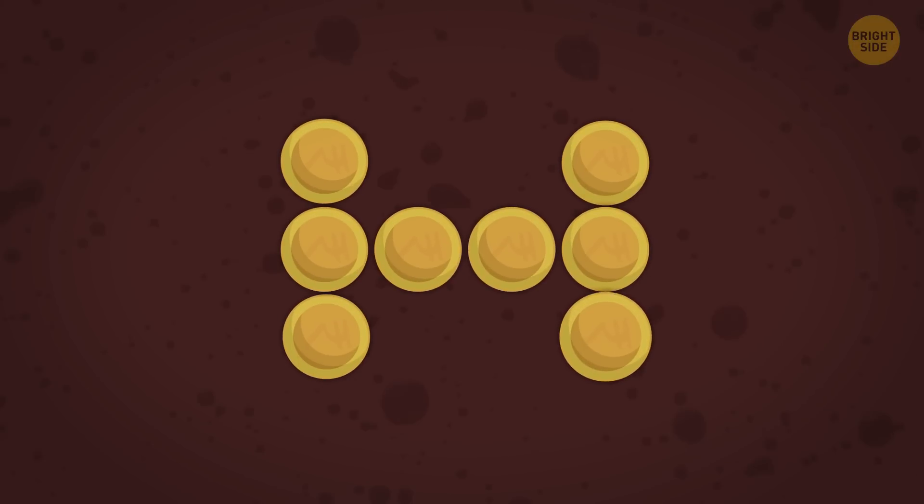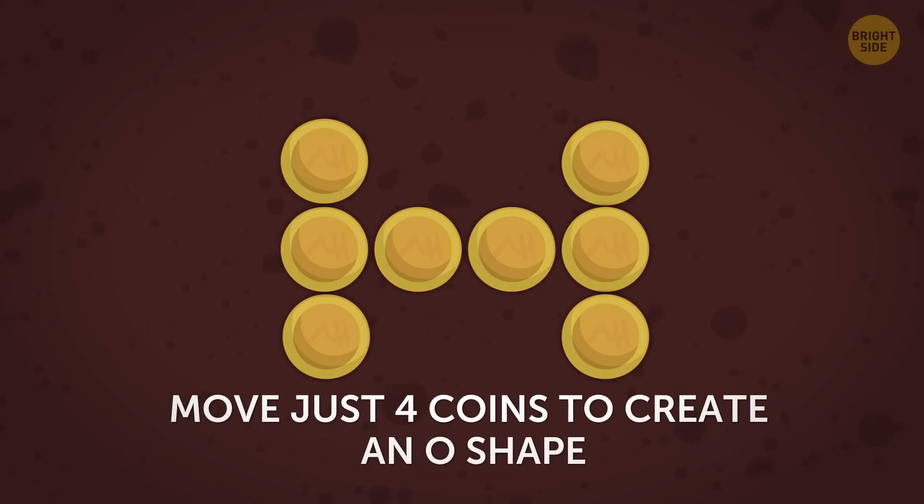The next puzzle will also check your ability to think outside the box. 8 coins are arranged in an H shape. The challenge is to move just 4 coins to create an O shape. Each of the 4 coins must always be touching 2 others in the shape and no gaps are allowed.